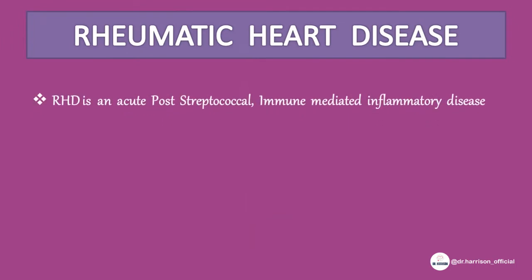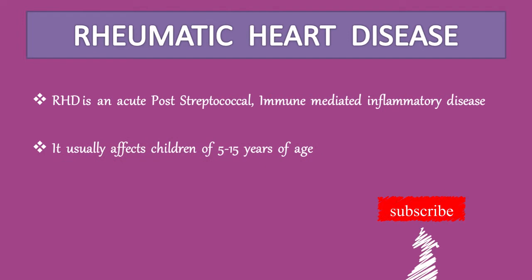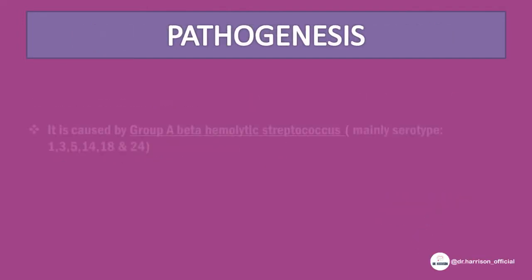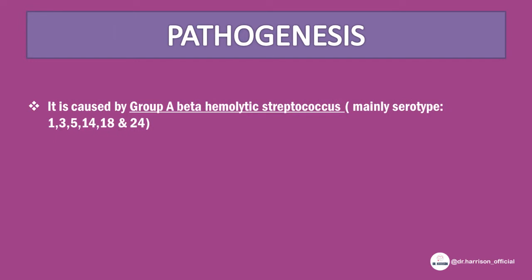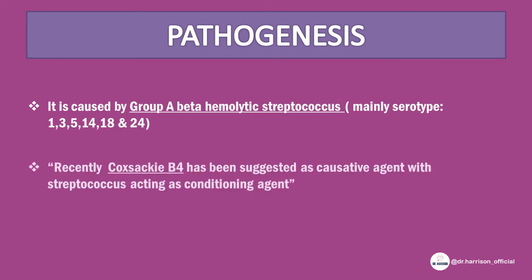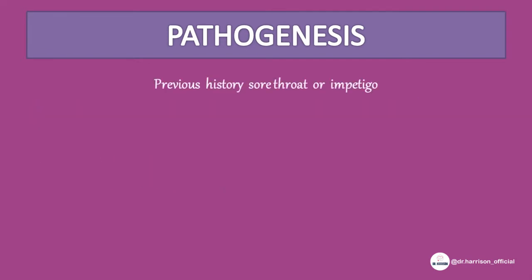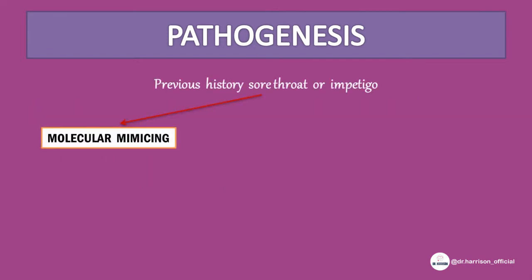RHD is an acute post-streptococcal immune-mediated inflammatory disease. It usually affects children of 5 to 15 years of age. It is caused by Group A beta-hemolytic streptococcus, mainly serotypes 1, 3, 5, 14, 18, 24. Recently, coxsackie B4 has been suggested as a causative agent, with streptococcus acting as a conditioning agent. Usually there is a previous history of sore throat or impetigo.